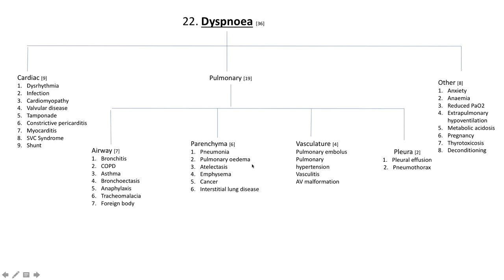What affects the parenchyma of the lung that can cause dyspnea includes pneumonia, pulmonary edema (which can be cardiogenic or non-cardiogenic), atelectasis, emphysema, cancer, and interstitial lung disease — we covered ILD in a previous algorithm.